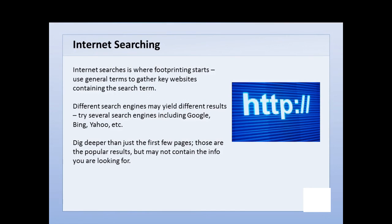Internet searching is probably where you'll start first when you begin your footprinting exercise against an organization or a person. It's very easy — we do it all the time in our daily lives. What you do is go from the general to the specific. The first thing you do is go ahead and do internet searches on a particular target — a company name, an individual's name, or any search terms that relate to the target you're after.